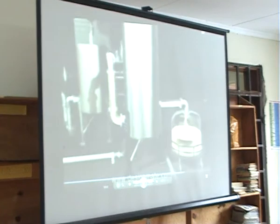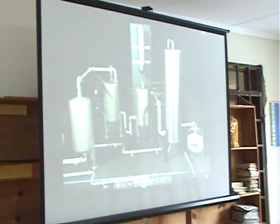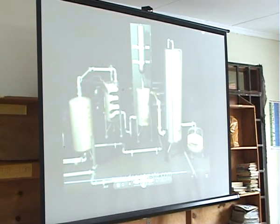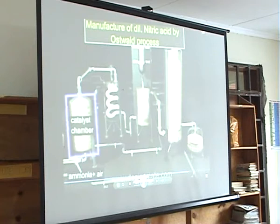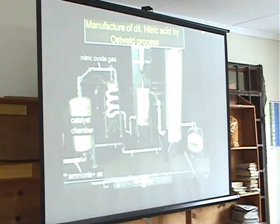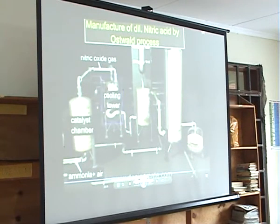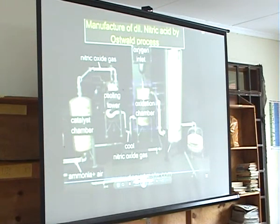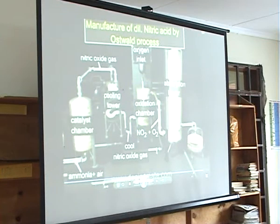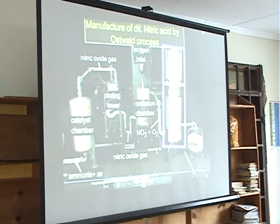Four molecules of NO2 and two molecules of H2O and one molecule of O2 gives four molecules of HNO3. Dilute nitric acid can be synthesized from ammonia via Ostwald's process. The mixture of ammonia and air is passed through a catalyst chamber where ammonia is oxidized to nitric oxide. This nitric oxide is passed to the cooling chamber, then enters the oxidization chamber connected to an oxygen inlet, where nitric oxide combines with oxygen forming nitrogen dioxide, which is then passed through the absorption tower where it dissolves in water forming dilute nitric acid.